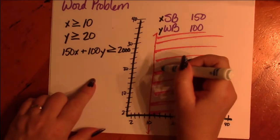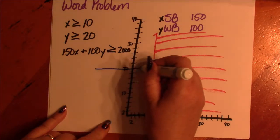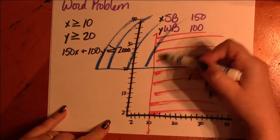If Y equals 20, then this is our wakeboard line, and anything up here counts.